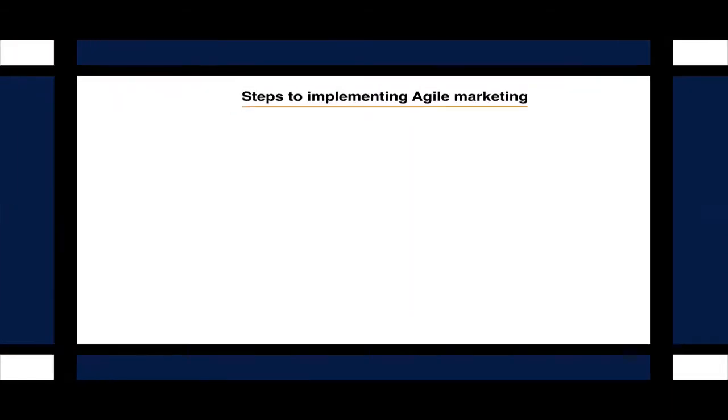I'm going to be talking about examples of companies that have implemented Agile Marketing. Now let's start with steps to implement Agile Marketing. The first step to implement Agile Marketing is to do a situation analysis.